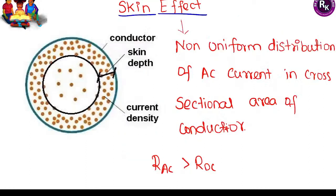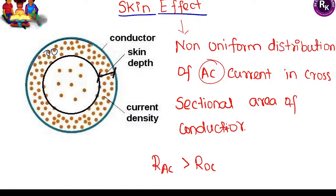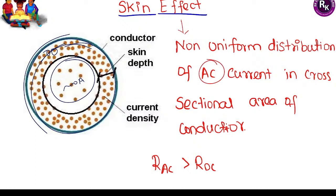Conductance in transmission lines is due to leakage current but is very small. Skin effect occurs because of the non-uniform distribution of AC current — not DC current. In the cross-sectional area of a conductor, electrons concentrate on the surface; at the center, current becomes almost zero. Current concentration is very high near the surface of the conductor. When passing AC current through the conductor, the AC resistance offered is higher than the DC resistance.